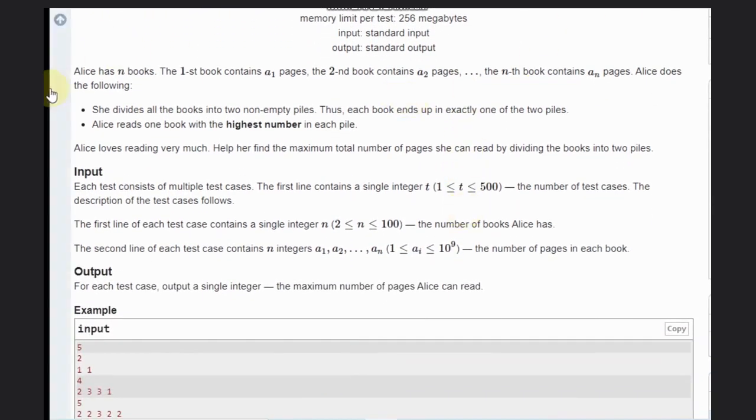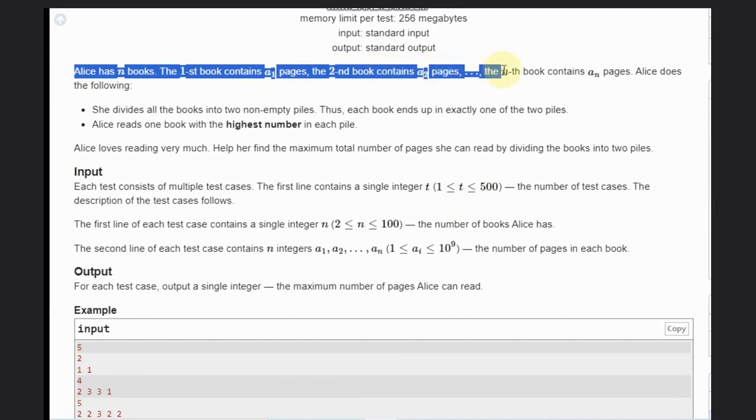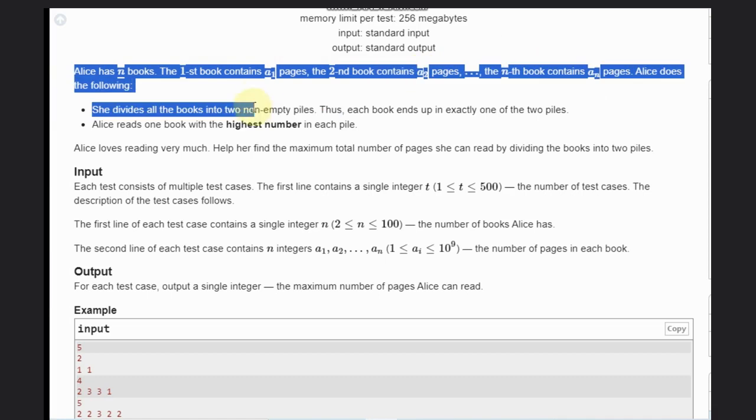So let's read the problem statement first. In this problem, Alice has n books. The first book contains a1 pages, second book contains a2 pages and so on. The nth book contains an pages. Alice does the following.